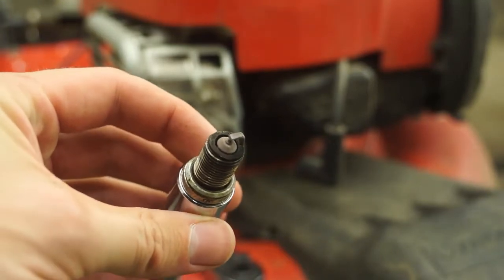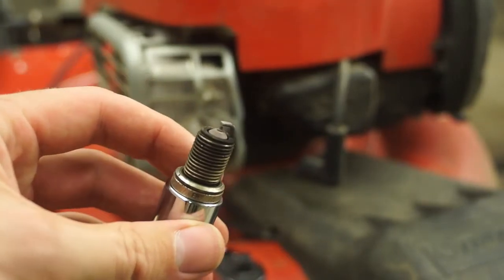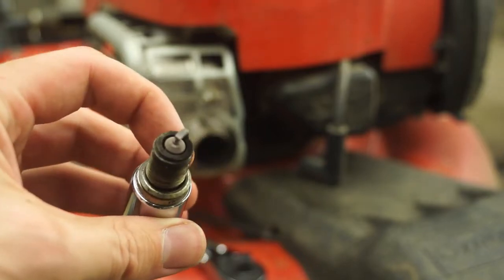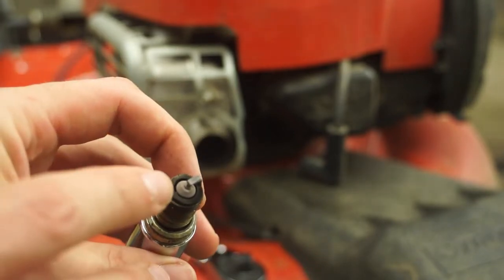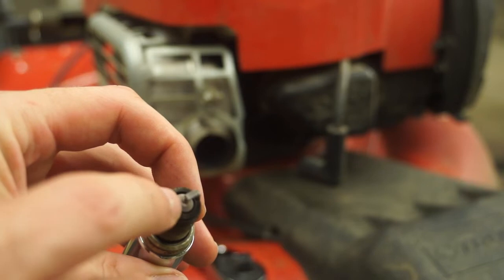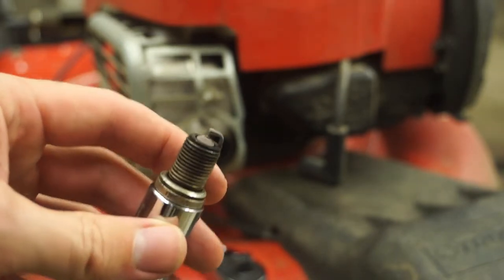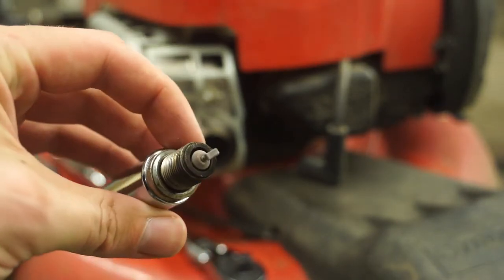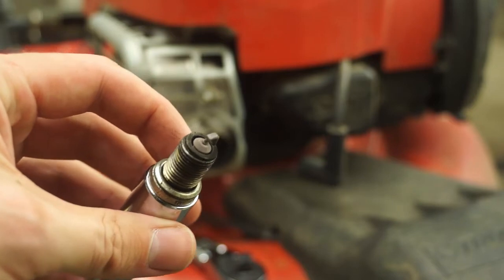So here's the plug. It doesn't actually look too bad. You can see it's a little bit carbonized around the tip, but actually for a lawnmower this looks pretty good. Normally I'd expect this to be really gunked up here, but it's pretty clean. We'll go ahead and get the new one changed out and put in there.